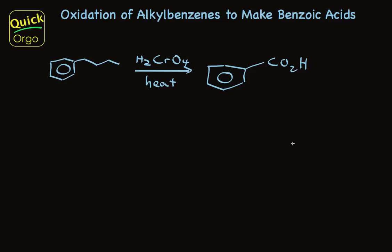Take a look at this remarkable reaction. Treatment of an alkyl benzene — this alkyl group has 4 carbons on it — with chromic acid in heat results in complete destruction of the alkyl group, replacement with a carboxylic acid attached directly to the aromatic ring.